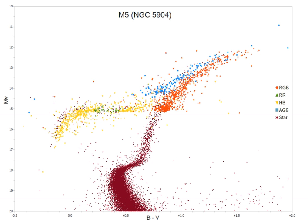The onset of core helium fusion at the tip of the red giant branch causes substantial changes in stellar structure, resulting in an overall reduction in luminosity, some contraction of the stellar envelope, and the surface reaching higher temperatures.